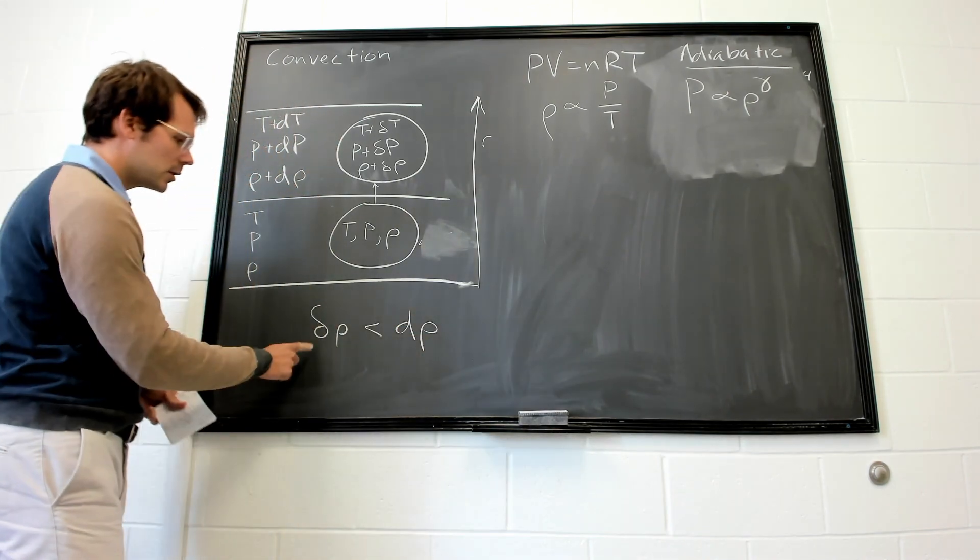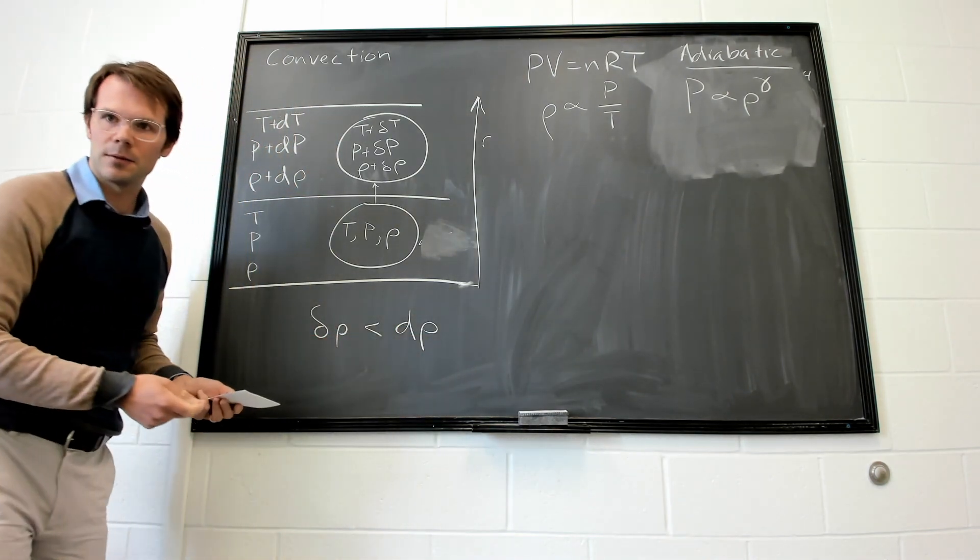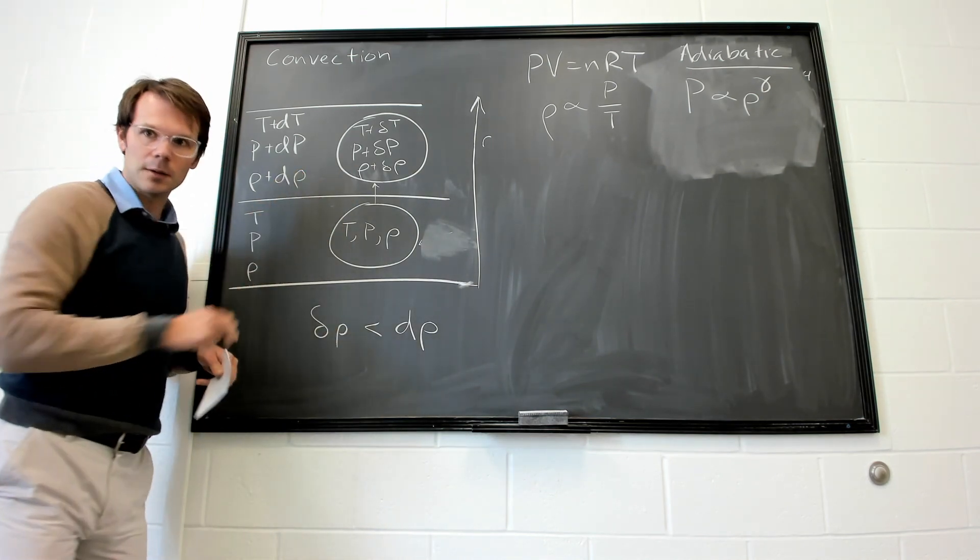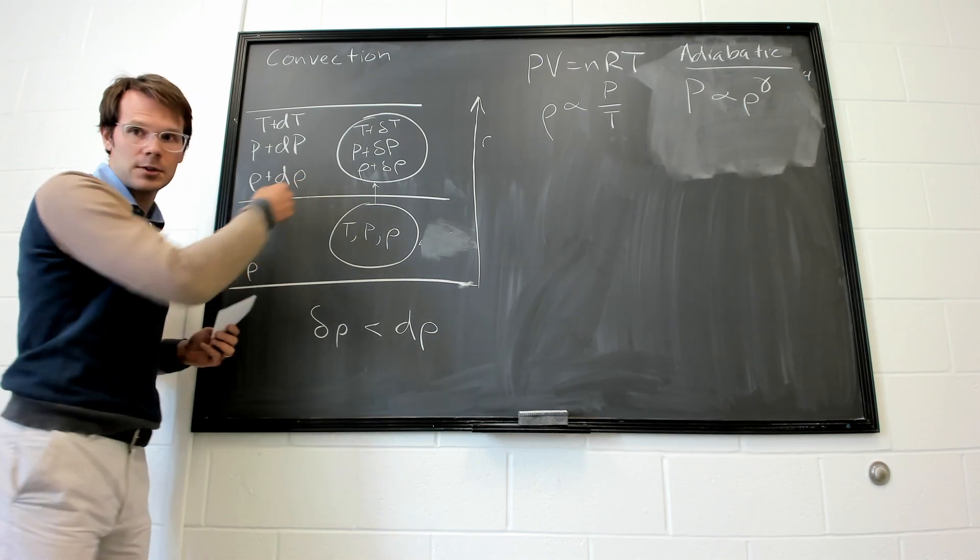And remember, these changes in densities are negative. So what we mean is this cell needs to be rarefying more quickly than the surrounding medium. It's getting less dense faster.